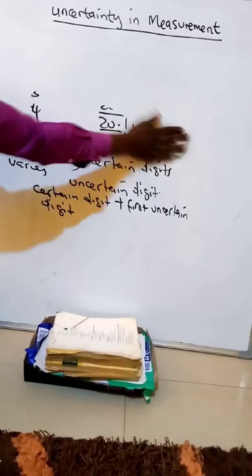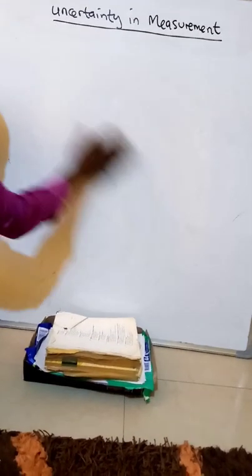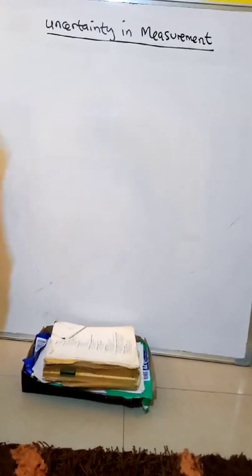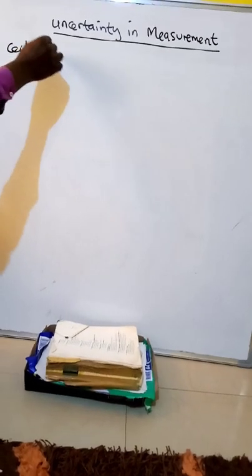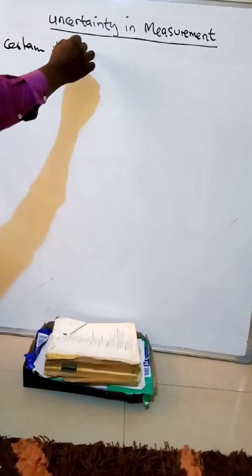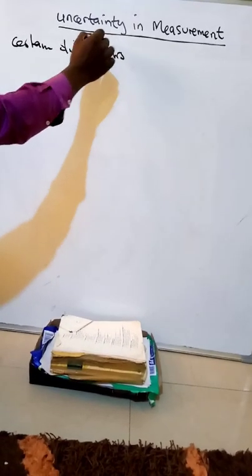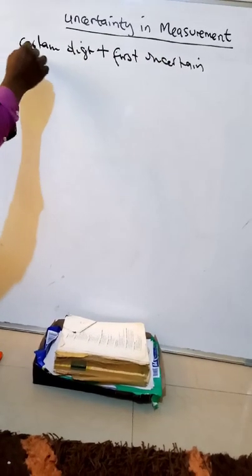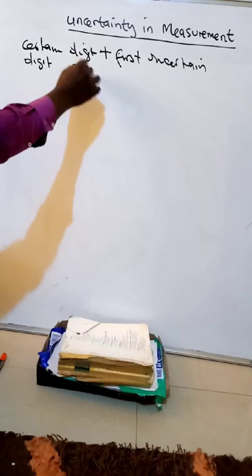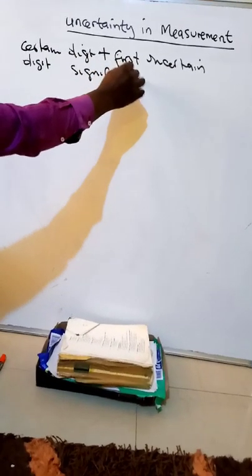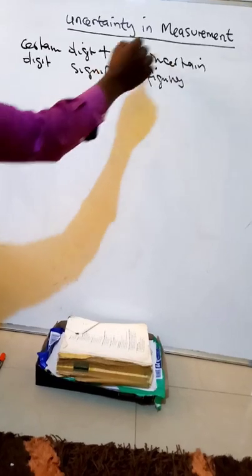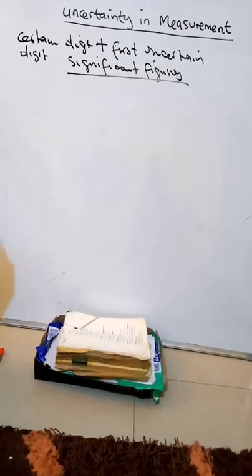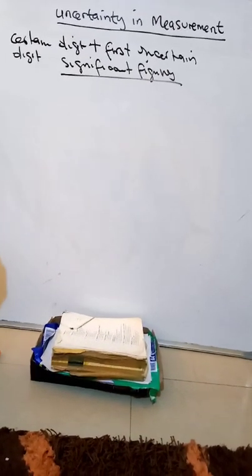Let's see how we record the measurements. Certain digits plus the uncertainty digit is what we call significant figures or significant digits. These numbers are called significant figures of a measurement.